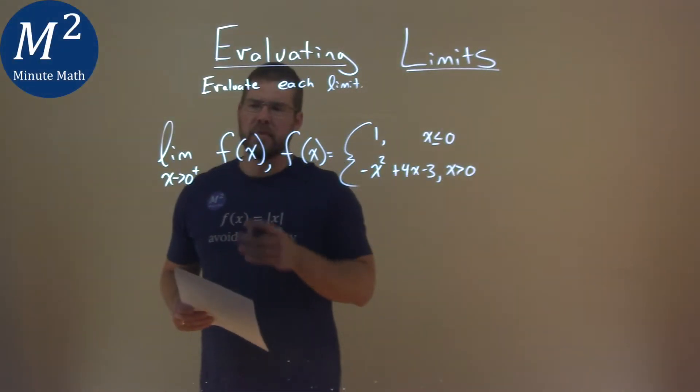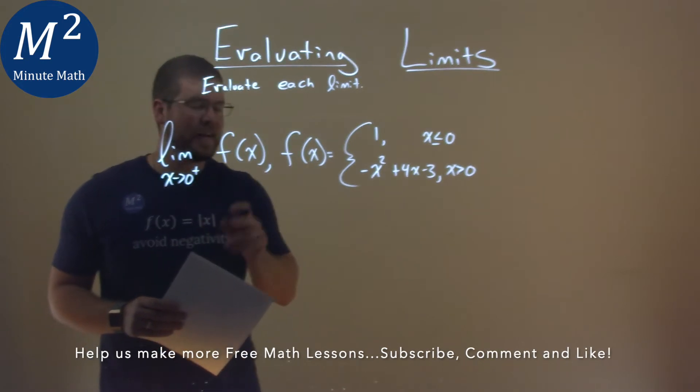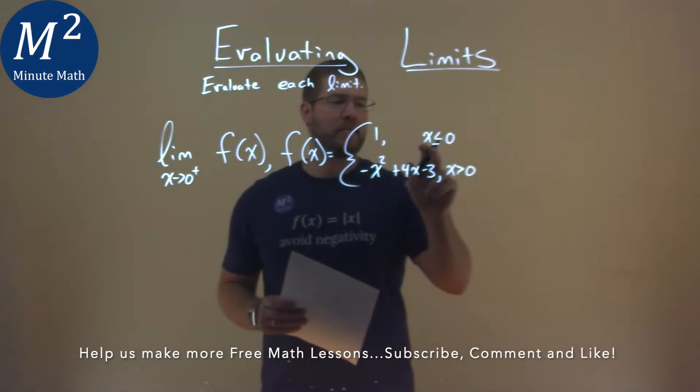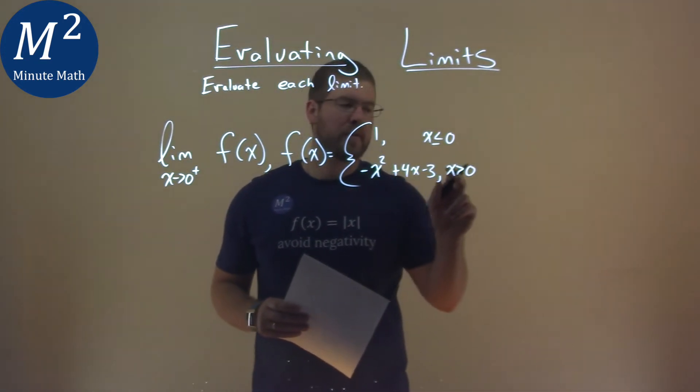We're given this problem right here, the limit as x approaches zero from the right of f of x, where f of x is equal to the piecewise function of one when x is less than or equal to zero, and negative x squared plus four x minus three when x is greater than zero.